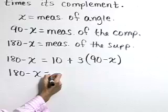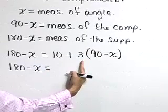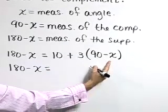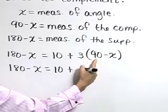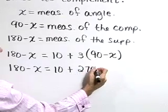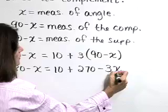Rewriting the left, and let's simplify on the right by distributing the 3 into parentheses. So the right becomes 10 plus, 3 times 90 is 270, minus 3 times x.